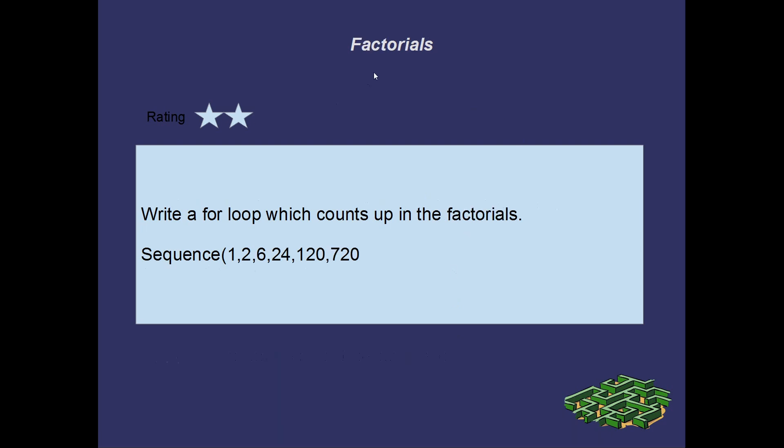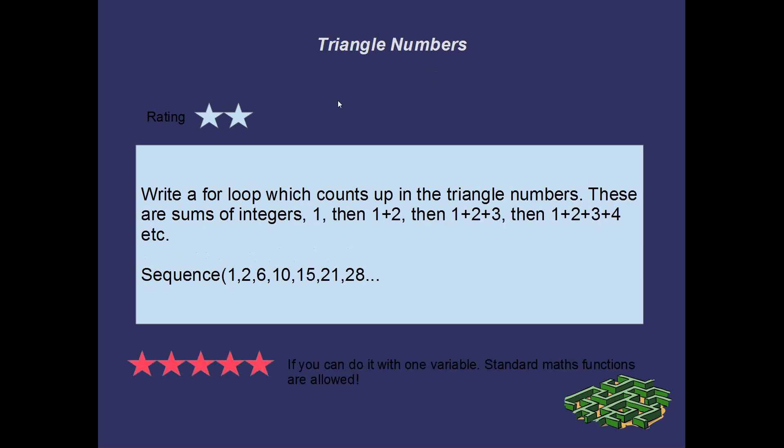Alrighty, next puzzle. Factorials. Yeah, I want you to write a for-loop that spits out the factorials. So have a look on Wikipedia if you're not sure how the factorial sequence works. But it's just consecutive numbers multiplied by each other. So like 3 factorial is 3 by 2 by 1. And like 10 factorial is 10 by 9 by 8 by 7 by 6 by 5 by 4 by 3 by 2 by 1. Et cetera, et cetera. So I want you to write out the consecutive factorials with a for-loop.